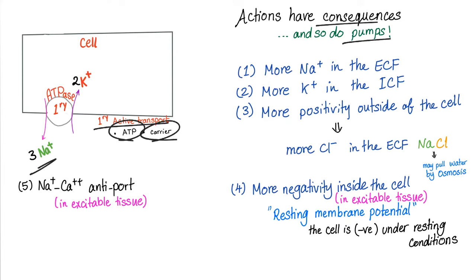The law of electroneutrality states that in any ionic solution, the sum of negative charges equals the sum of positive charges — cations equal anions. In the extracellular fluid, the main cation is sodium; the main anions are chloride and bicarbonate. The difference between them is called the anion gap. The anion gap equals sodium minus (chloride plus bicarbonate) — positives on one side, negatives on the other.